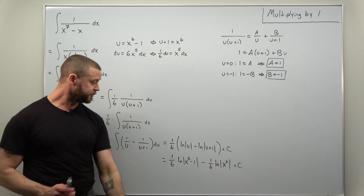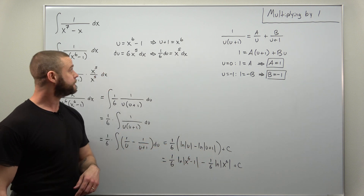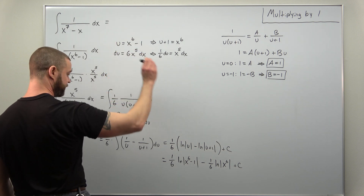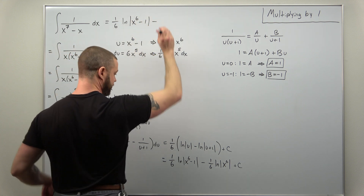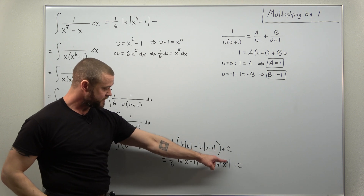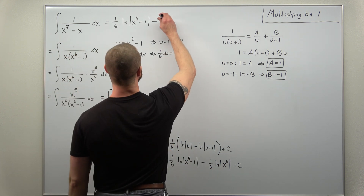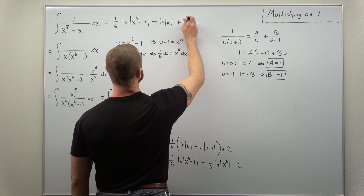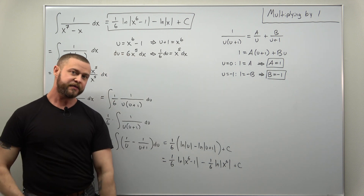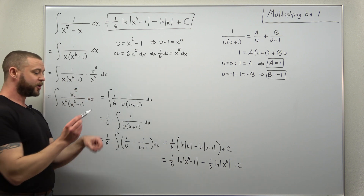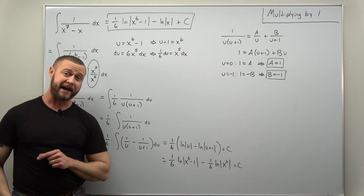You can actually simplify this a little bit. Using properties of logs, you can bring that exponent six down. So our answer is: (1/6) natural log of (x⁶ minus one), and then applying log properties again, bringing that exponent six down — six times 1/6 cancels to one — you can write that as minus natural log of x. The key was making your substitution work with this algebraic trick: multiplying by one, thinking of one as x⁵ over x⁵.